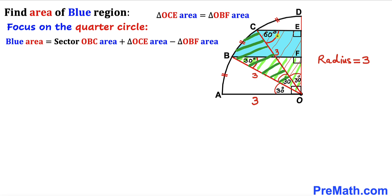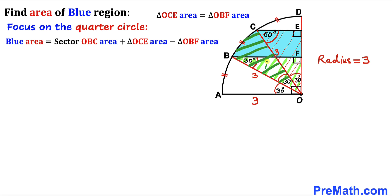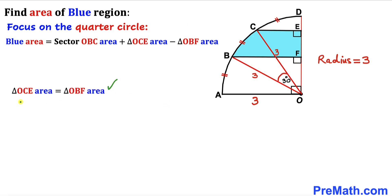Now let's make an observation. The area of the blue shaded region is going to be equal to the sector OBC area, plus the triangle OCE area, minus the triangle OBF area. To summarize: this is the sector OBC area, this is the triangle OCE area, and this is the triangle OBF area.